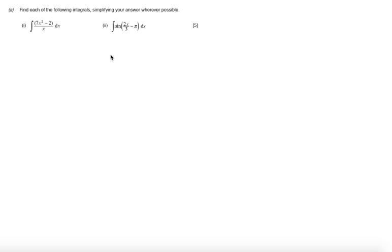In this question we're asked to find each of the following integrals, simplifying your answer wherever possible. So starting with part i, the integral 7x squared minus 2 over x dx.